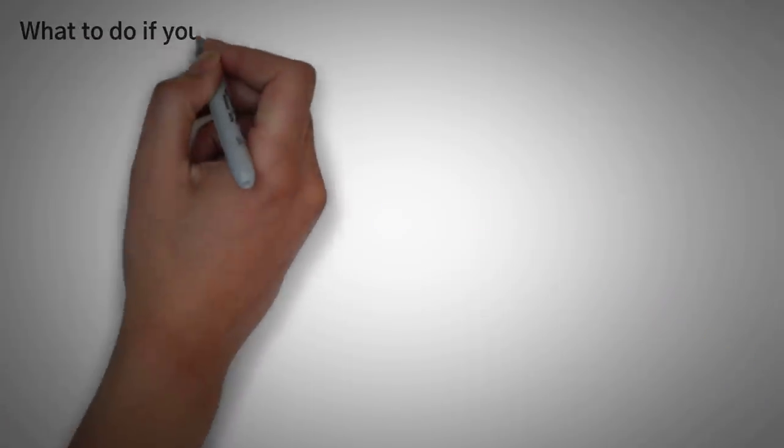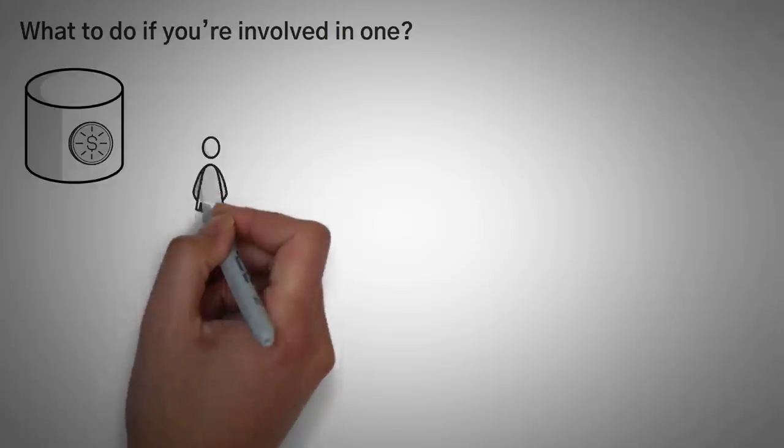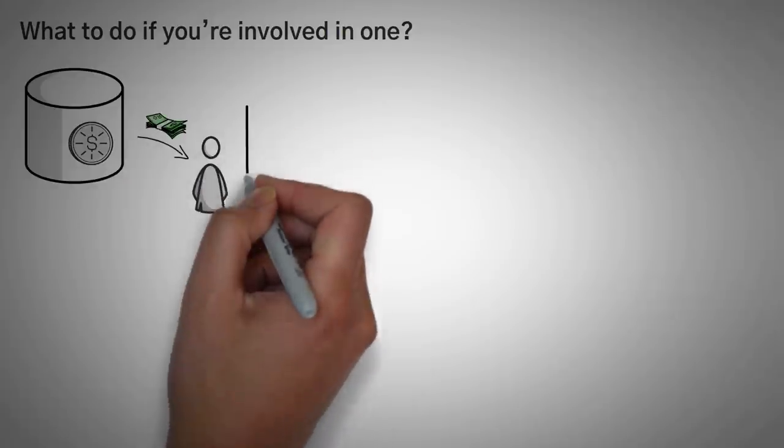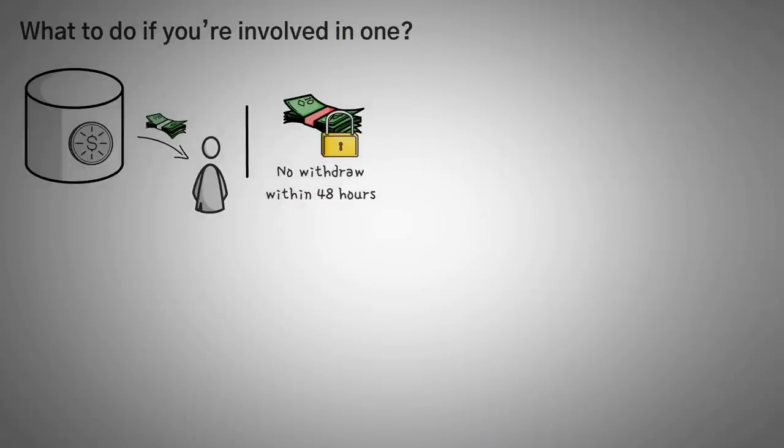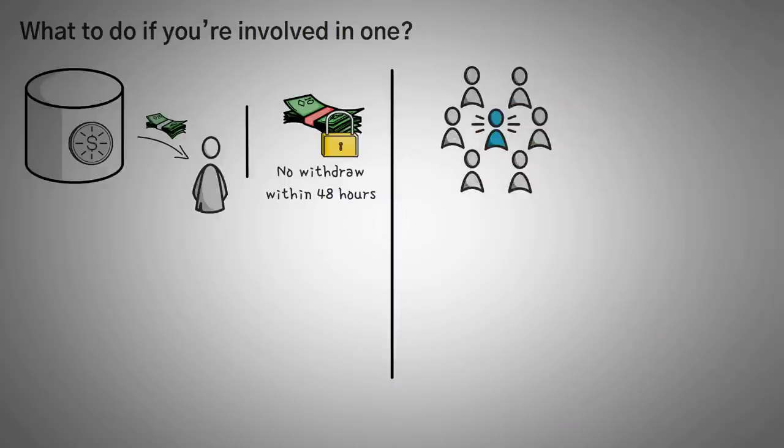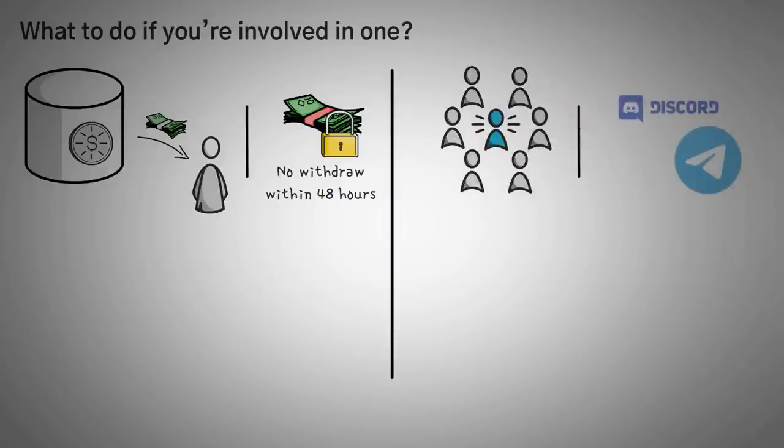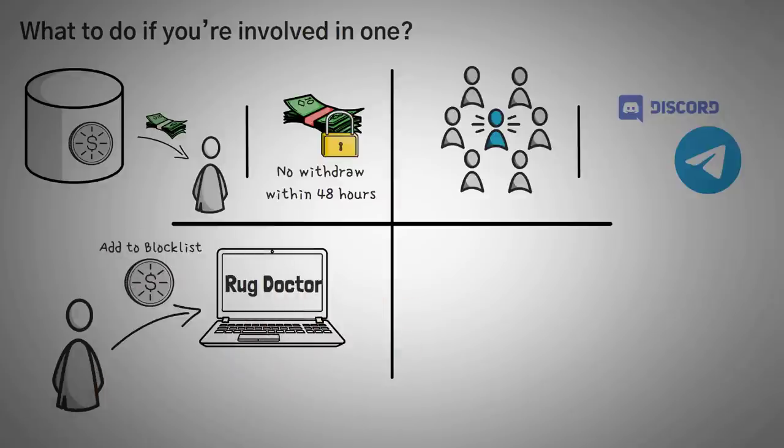So lastly, we want to go over what to do if you're involved in one. Well, the first thing you should do is remove your investment if you notice that it's going to be rug pulled. This can be tricky as sometimes there are time locks where you can't withdraw within 48 hours of your initial deposit. Secondly, you should probably tell everyone else about the rug pull. Maybe you can share via the Discord or the Telegram. Thirdly, you should reach out to Rug Doctor and maybe they can add the token to their list.